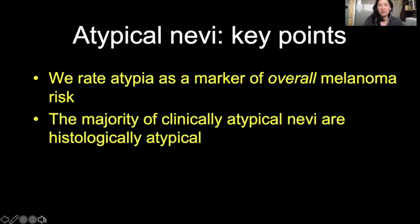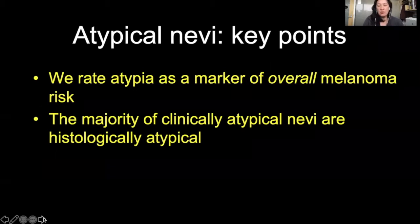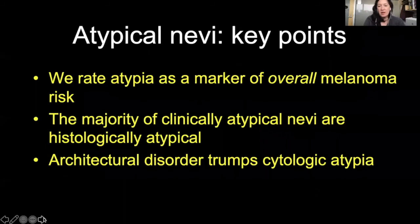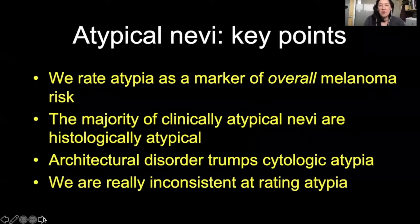We are trying to rule out melanoma. The majority of clinically atypical nevi are histologically atypical, so it's not unusual that a lot of the nevi that we see coming across our desks in dermatopathology are atypical. Architectural disorder generally trumps cytologic atypia, although we obviously take both into account. And we are super inconsistent at rating atypia — there is very poor inter-rater reliability.